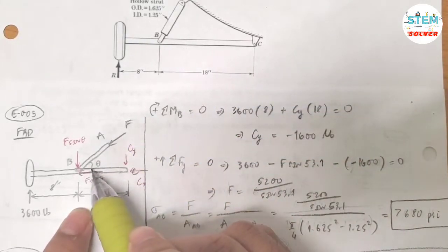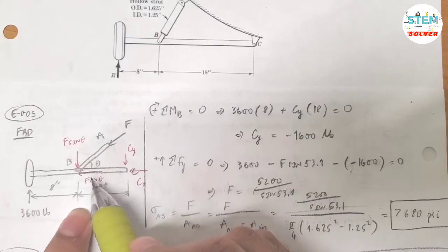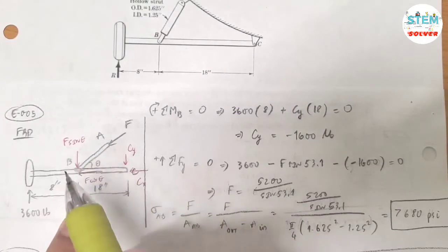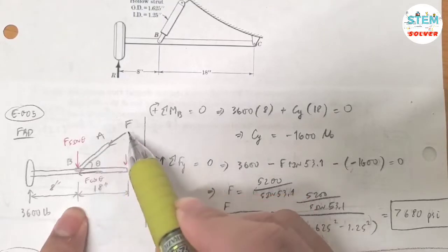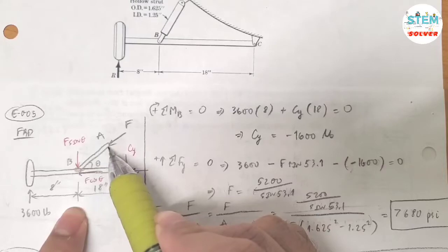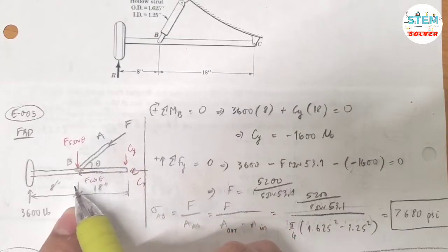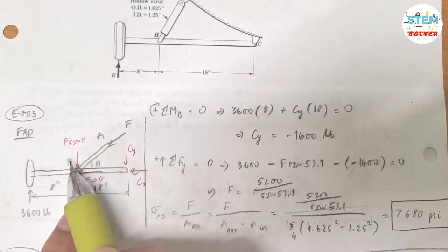And the angle between BC and AB is given as 53.1 degrees. So at B, because this is the pin joint, you have the force in... basically you have this force, and this force can be broken down into X and Y components. So in the X component, I have F cos θ. In the Y component, I have F sin θ.